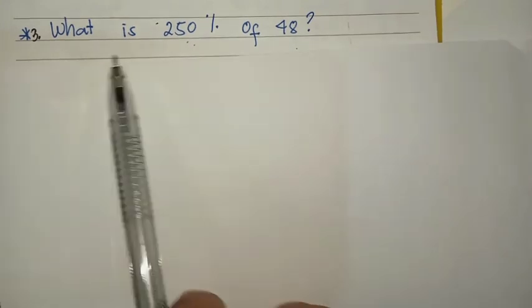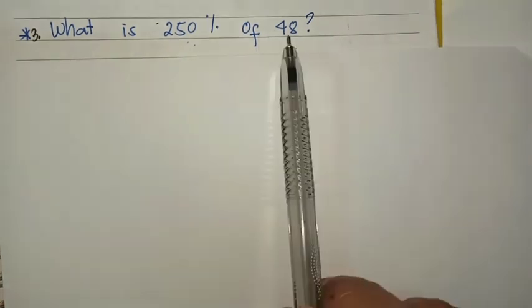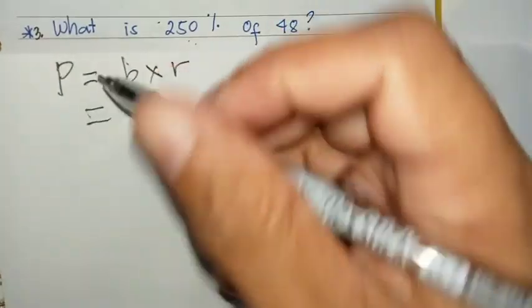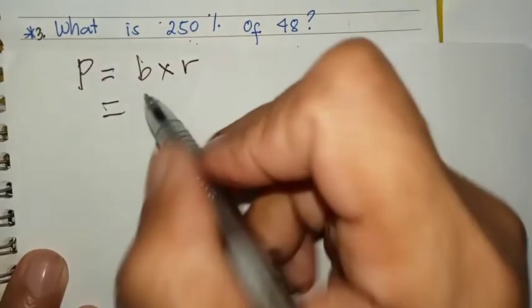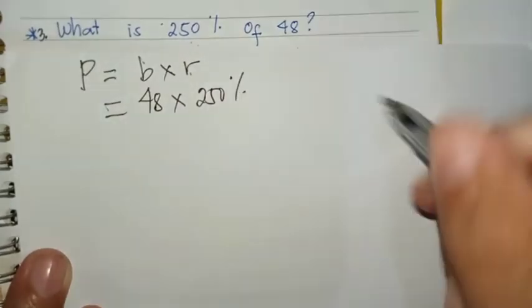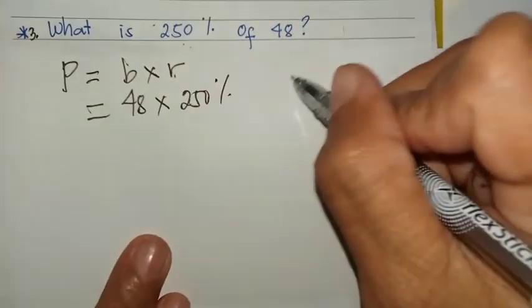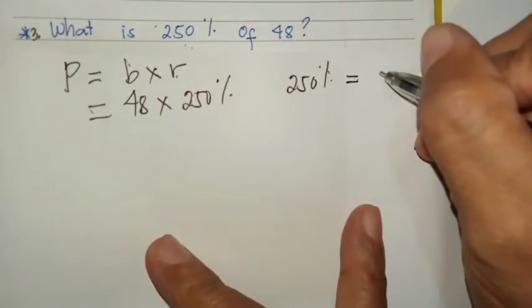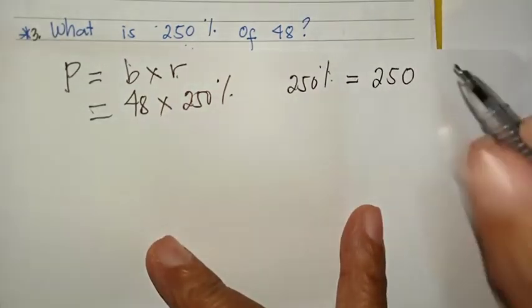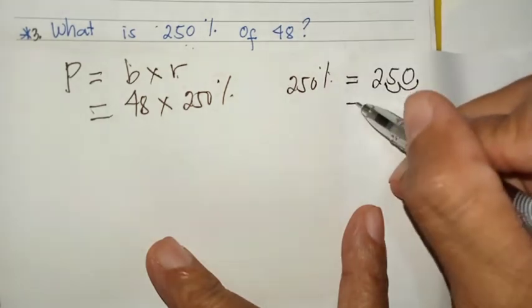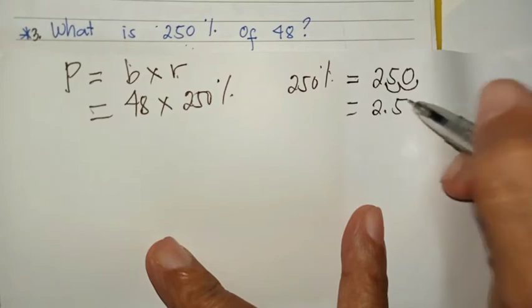Take a look at the third example. What is two hundred fifty percent of forty-eight? Using the formula of part: part equals base times the rate. We identify the base and rate. The base is forty-eight times the rate, which is two hundred fifty percent. Now, we change two hundred fifty percent into its equivalent decimal. Drop the percent symbol. Then, move two places to the left. The answer is two and fifty hundredths.